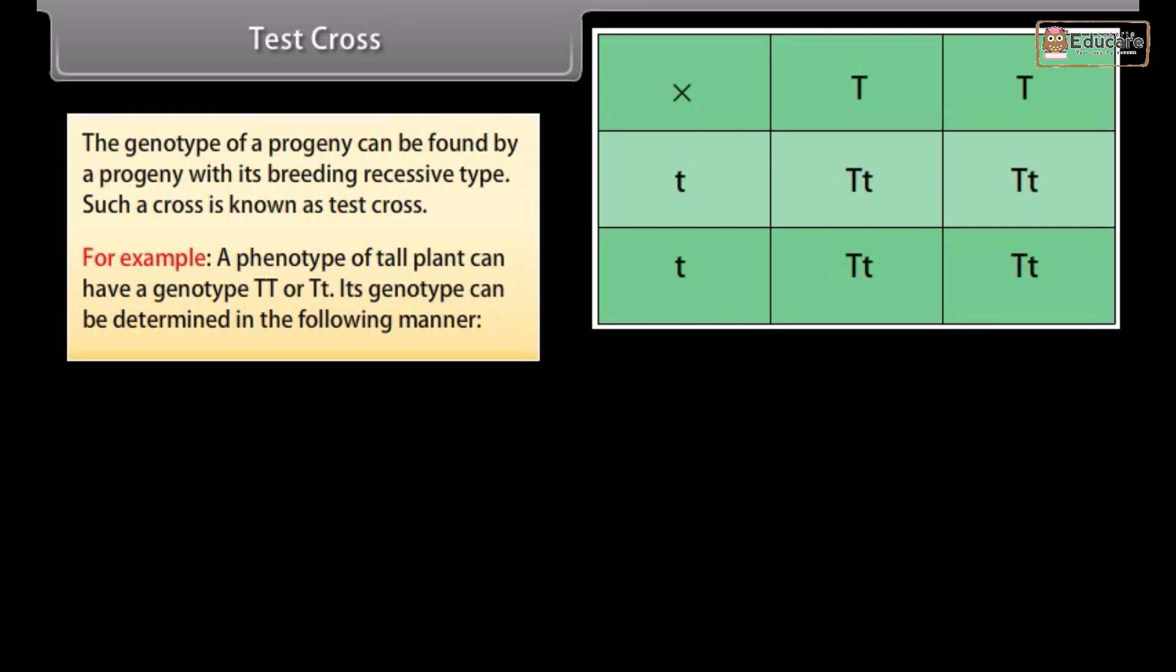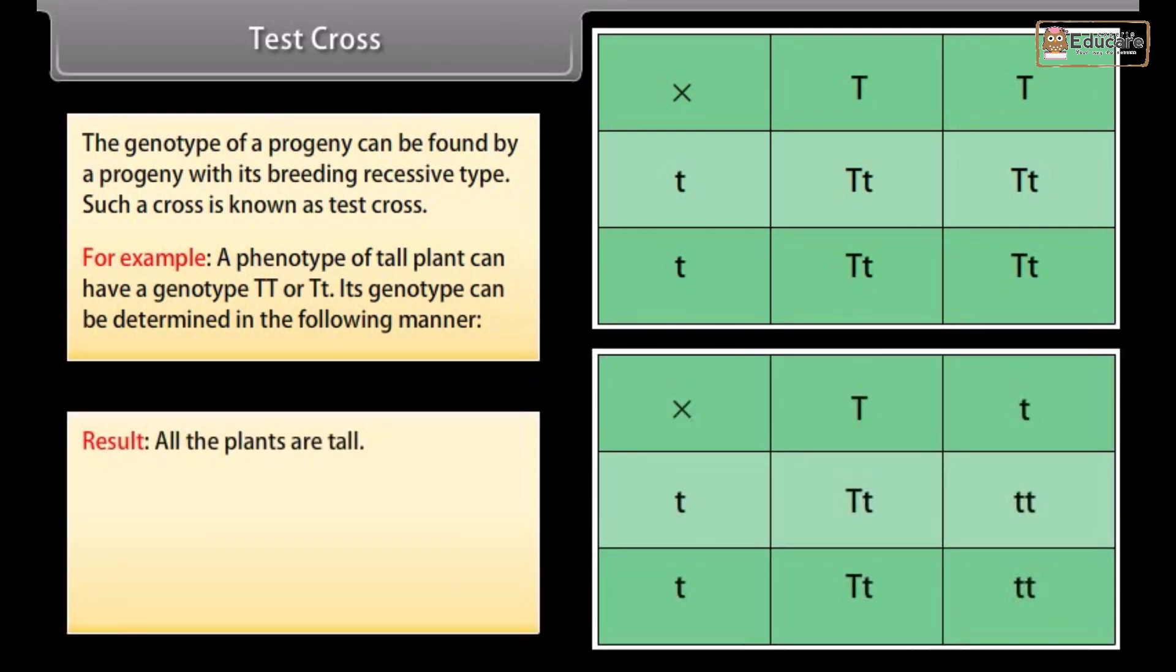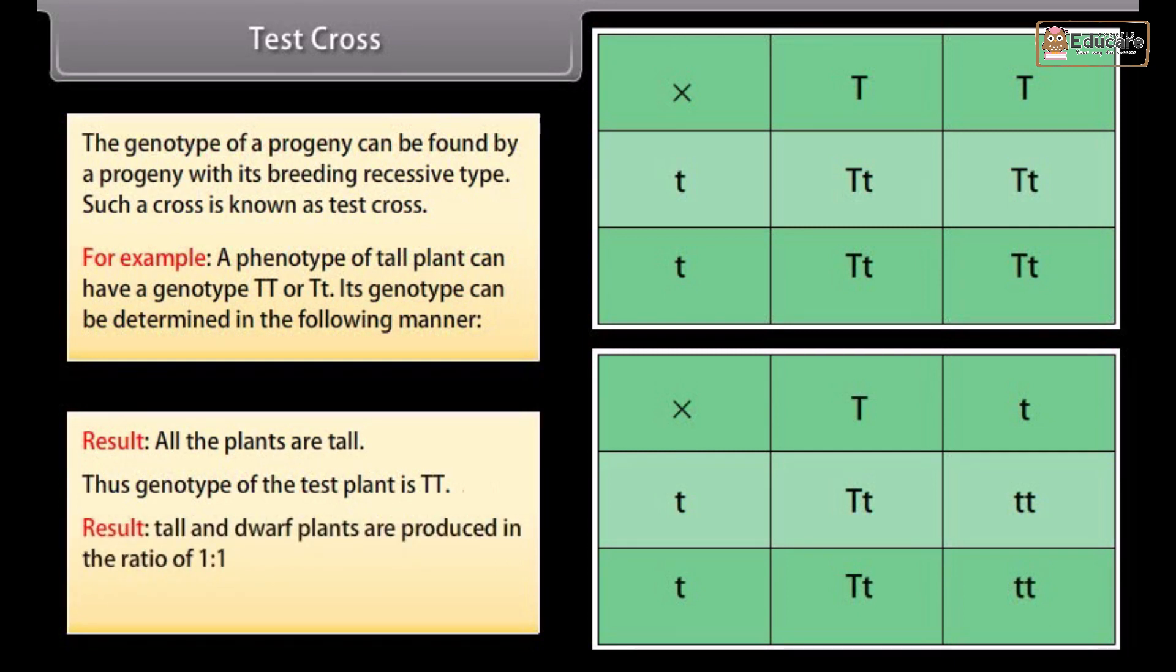In the first case, all the plants are tall, thus the genotype of the test plant is TT. In the second case, tall and dwarf plants are produced in the ratio of 1:1, thus genotype of test plant is Tt.